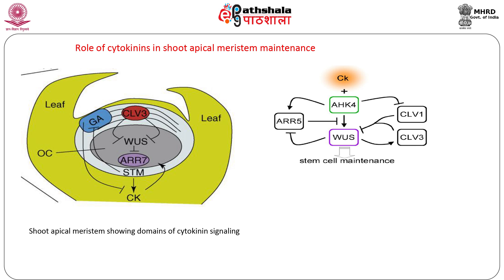The WUSCHEL protein in turn inhibits ARR5 and ARR7, both of which represent type A response regulators. Hence, the cytokinin signal is modulated by WUSCHEL. Another protein, CLAVATA, which is expressed in the region above the organizing centre, restricts WUSCHEL expression by inhibiting its expression in this region. Cytokinins can also induce new meristems from differentiated cells.